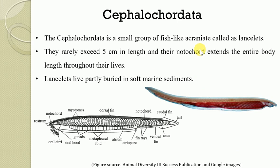The third subphylum is Cephalochordata. Cephalochordata is a small group of fish-like acraniate animals called lancelets. They are commonly referred to as lancelets. They rarely exceed five centimeters in length — they are comparatively very small organisms — and their notochord extends the entire body length throughout their lives. The lancelets live partly buried in soft marine sediments.